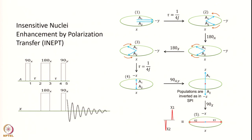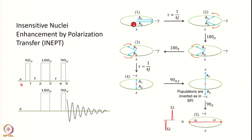Let us assume we sit on the rotating frame of the A spin. These are time points 1, 2, 3, 4, 5. Before the 90° pulse, the magnetization is along the Z axis — at time point 0, the magnetization is along Z. When I apply a 90° pulse, the magnetization comes onto the −Y axis. I am applying the pulse only to the A spin, so I consider only the A spin. With coupling between A and X, there will be two transitions A1 and A2, and both magnetizations are along the −Y axis.